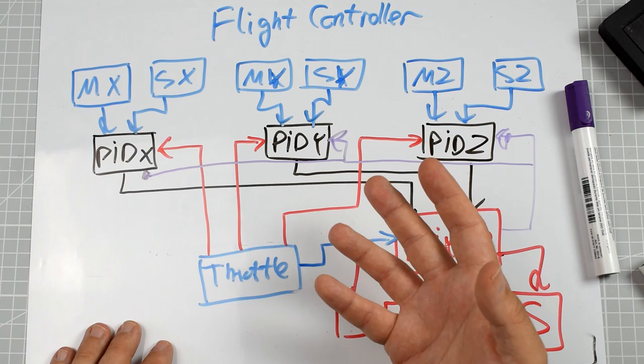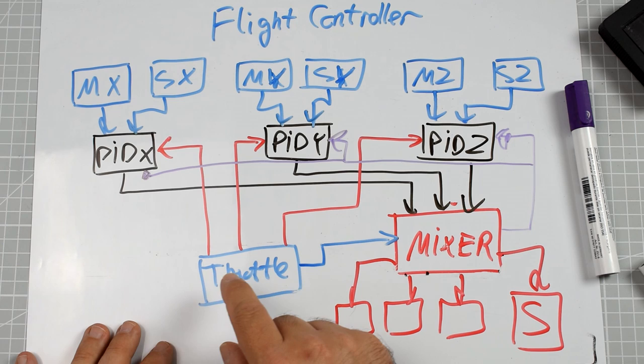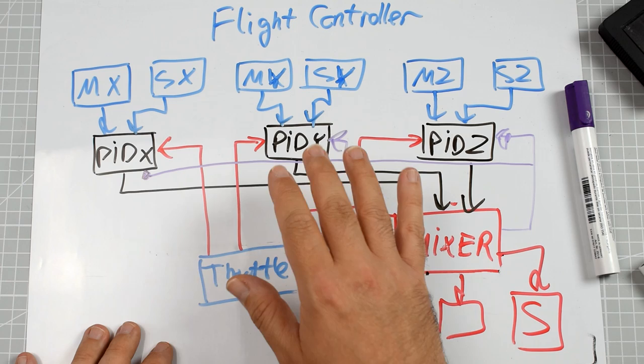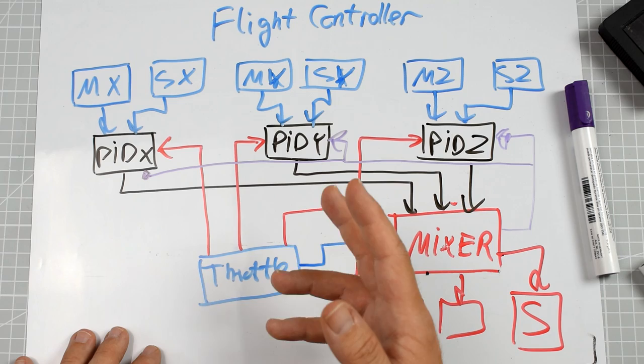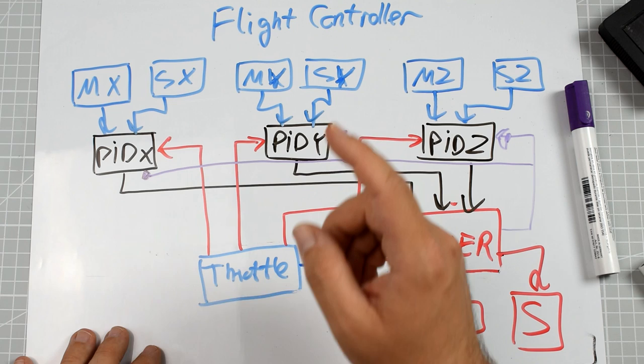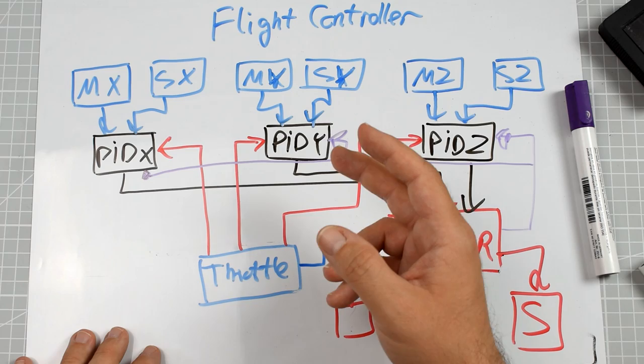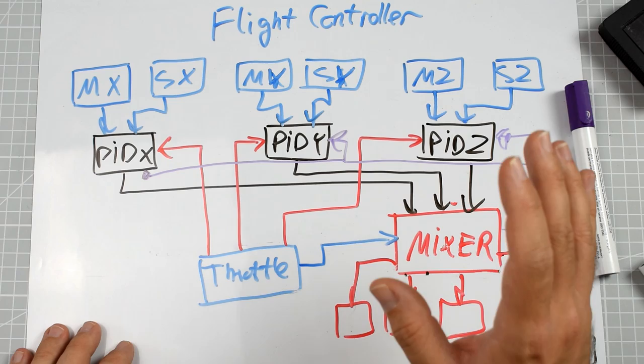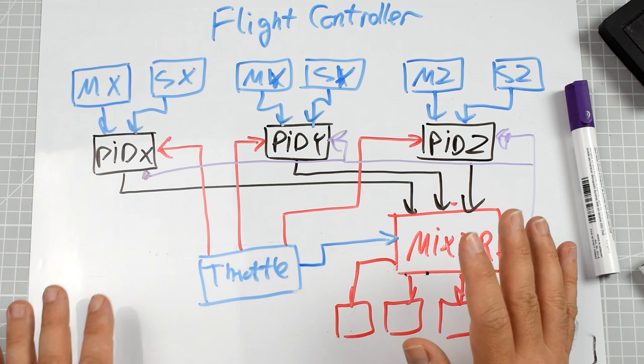So we filter measurements from the gyro, we filter stick input, we filter D-term, and we filter the accelerometer. Anti-gravity is an additional filter on the throttle. The D-boost and I-term relax each add extra filters on the measurement. So the flight controller is about PIDs and the mixer, but mainly today it's about filtering — there are so many filters inside that we won't cover them all today.